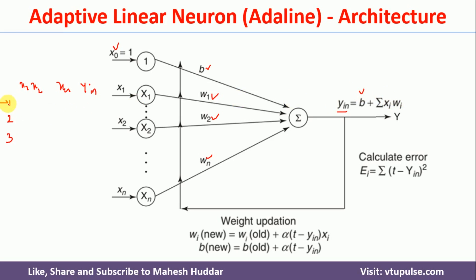For the first example, the input values are given and yin is calculated. Once yin is calculated, we go back and update the weights and bias. The weight update equation is: w_i(new) = w_i(old) + alpha * (t - yin) * xi, where w_i(old) is the previous weight, alpha is the learning rate, t is the target, yin is the calculated value, and xi is the input. We update w1, w2 through wn using this equation. The bias is updated as: bias(new) = bias(old) + alpha * (t - yin).